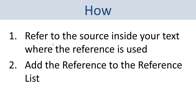How should you use citation and referencing? You need to refer to the source inside your text where the reference is used. At the part of the text where the reference is used, you need to insert a reference to that source. At the end of the document you need to add a reference list where all the references you have used are listed.